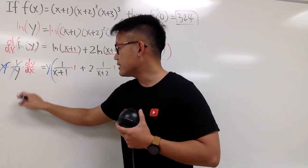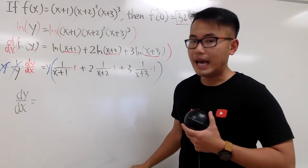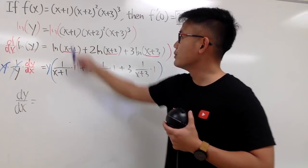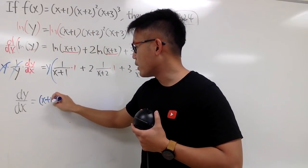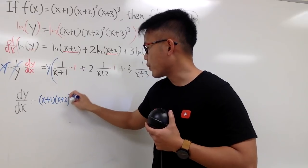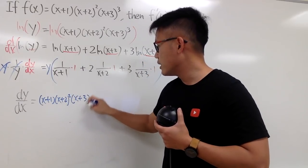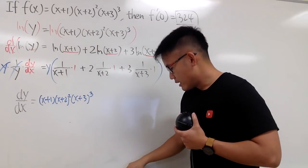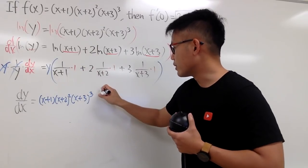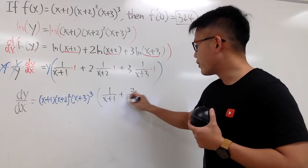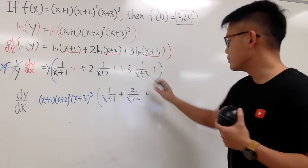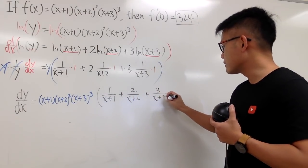So, we have dy/dx, and this is equal to, we have the y, and we are going to just write down the y back, which is that. So, (x+1)(x+2)²(x+3)³. And then, for the inside, we just pretty much have this, which is 1/(x+1) + 2/(x+2) + 3/(x+3).